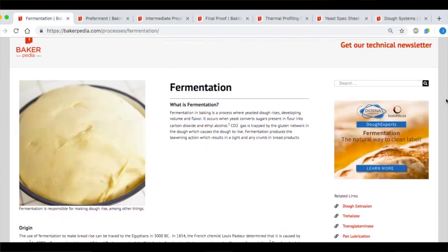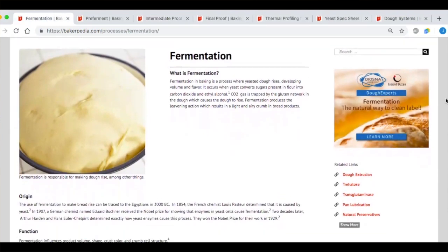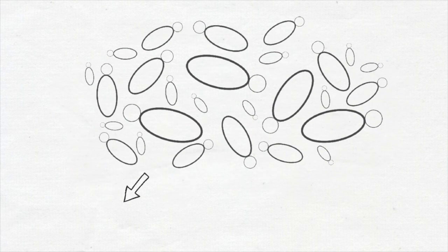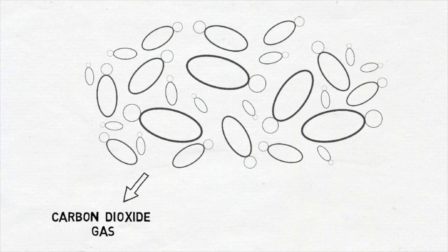Yeast is a single-cell microorganism, part of the fungus kingdom. It promotes alcoholic fermentation by feeding on sugars, making it an excellent leavener in baking. Yeast has three main roles in the fermentation process. First, yeast produces gas in the form of carbon dioxide, caused by the yeast feeding on the fermentable sugars in the dough. The carbon dioxide creates gaseous expansion in the dough within the protein matrix, allowing it to increase in volume.